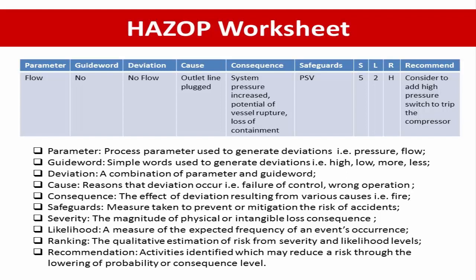For the parameter column, we use process parameters such as flow, pressure, or level. For the guide word column, we use standard guide words such as no, high, low, or less. After combining the parameter and guide word, we call it a deviation — for example, 'no flow.' The chairman will then ask about the cause in the meeting and participants provide answers. For example, the cause of no flow from outlet line product may be from the fluid itself. The maximum consequence could be that system pressure increases, leading to puncture of a vessel, rupture, and loss of containment. Then the team identifies existing safeguards by reviewing the P&ID — for example, a PSV may be available as overpressure protection.